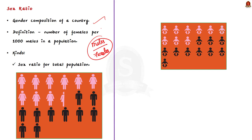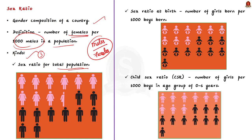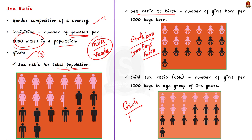For calculation purposes in India, sex ratio is defined as the number of females per 1000 males in a population. But in international terms, sex ratio is the number of males per 100 females — so don't get confused. Three kinds of sex ratio are calculated in India. First is for the total population — the number of females per 1000 males. Second is sex ratio at birth — the number of girls born per 1000 boys born. Third is the child sex ratio — the number of girls per 1000 boys in the age group of 0 to 6 years.